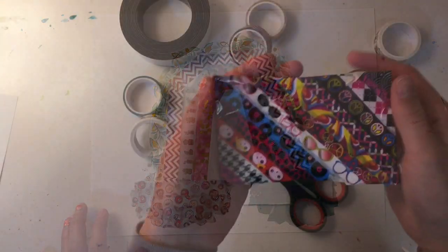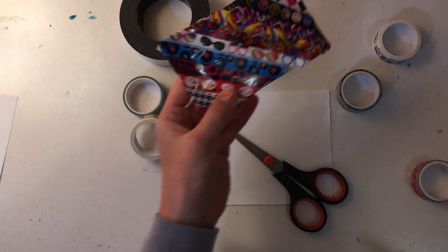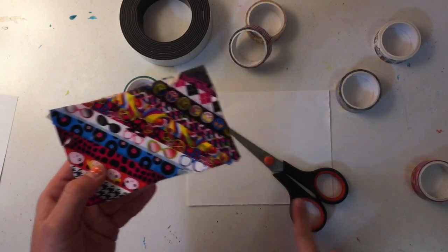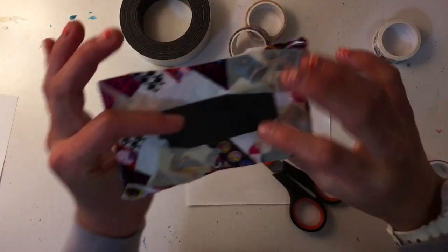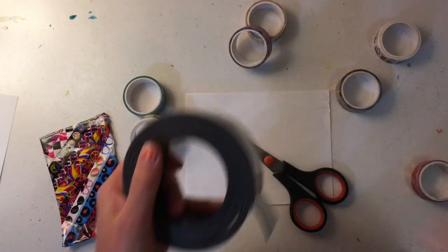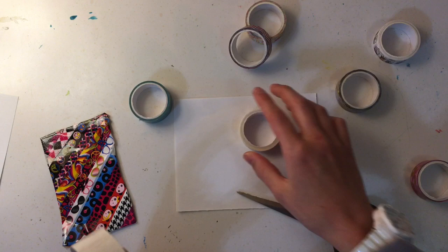This is the next one, this is what it's going to look like. Well it won't look exactly like this because I'm not using the same tape but I'm using, and it's going to be a magnet. I'm using this stick-on magnet stuff, some scissors and some paper and of course washi tape. Let's get started.